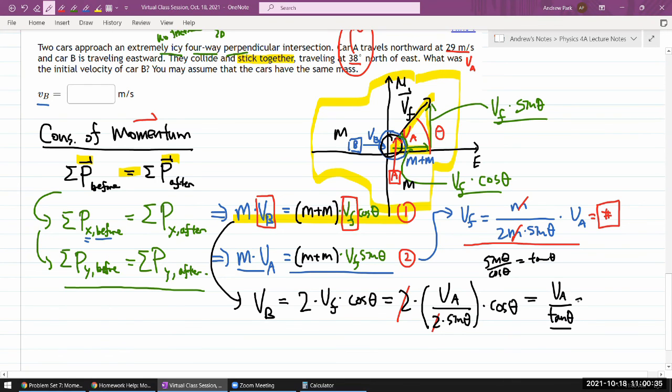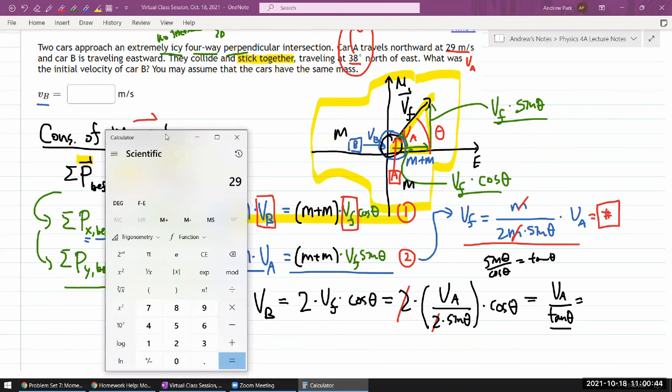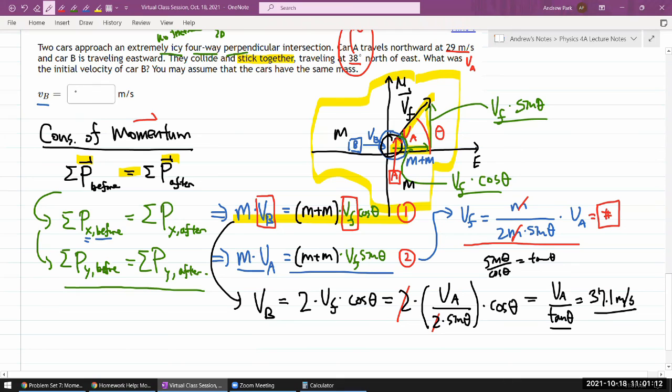So now I can plug in the numbers. I have VA, that's 29 meters per second, divided by tangent 38 degrees, which is equal to 37.1 meters per second. And that's it.